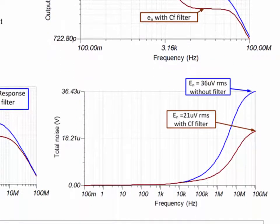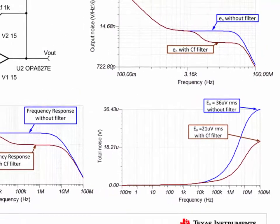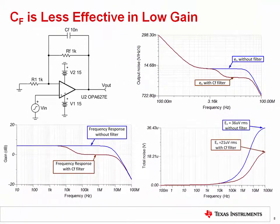Finally, the integrated noise curve on the bottom right, with and without the filter, shows the noise is reduced from 36 to 21 microvolts. So here, noise is reduced by a factor of 1.7 for this circuit, but was reduced by a factor of 8.5 for the previous high-gain circuit. We can see from this example that the CF filter is not as effective for low-gain circuits. In this case, how do we properly filter noise from low-gain circuits?